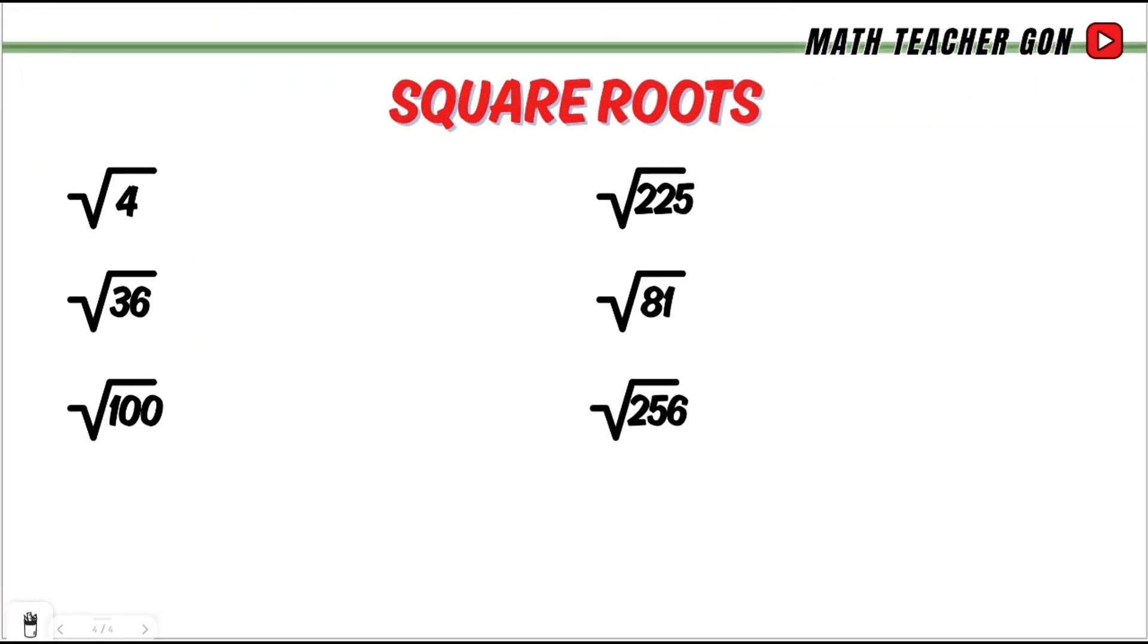Let's proceed to these examples. Help me in answering this. What is the square root of 4? So again, square root of 4, you think of a number that when you multiply by itself, the result is 4. And that is 2 times 2, meaning the square root of 4 is equal to 2.